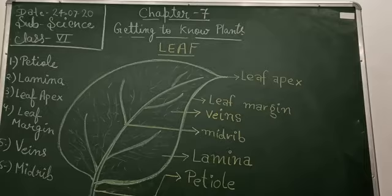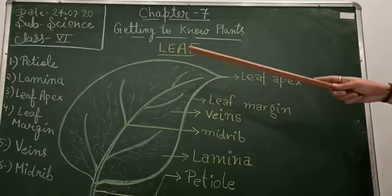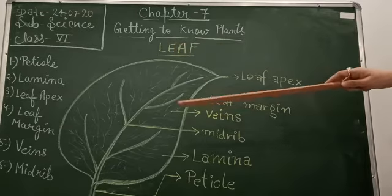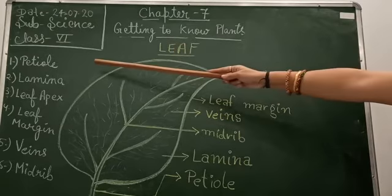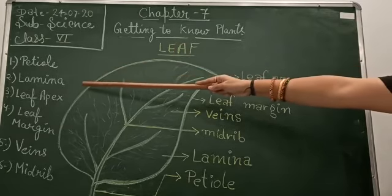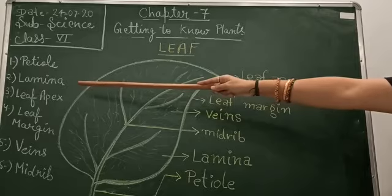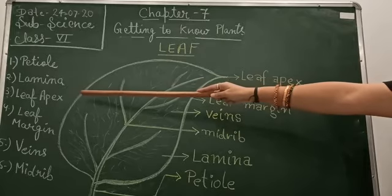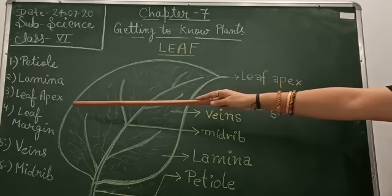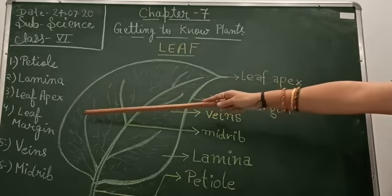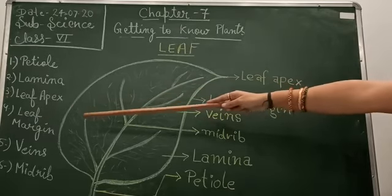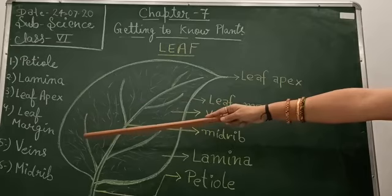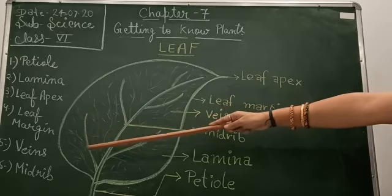Parts of leaf. There are mainly 6 parts of leaf: 1. Petiole, 2. Lamina, 3. Leaf Apex, 4. Leaf Margin, 5. Veins.